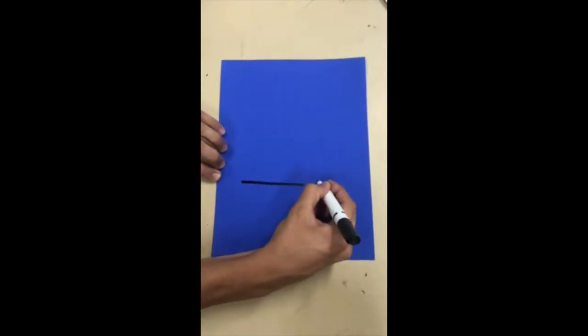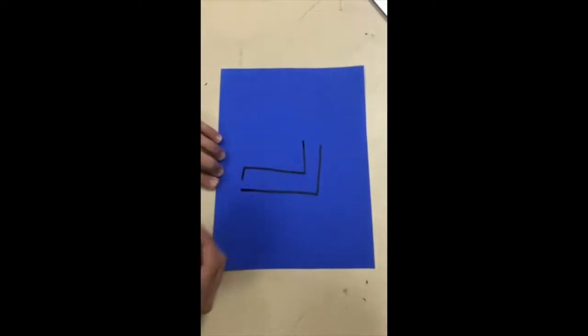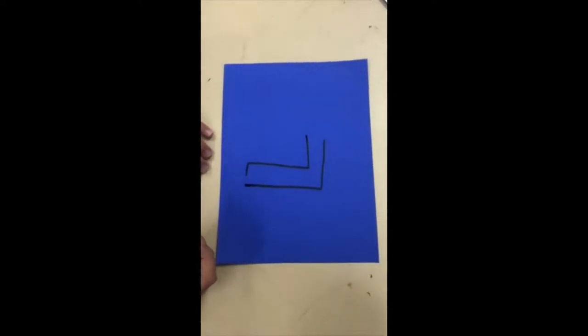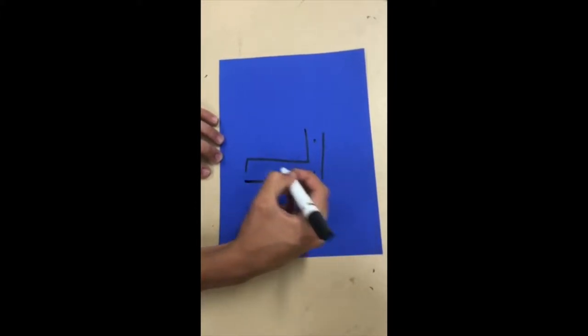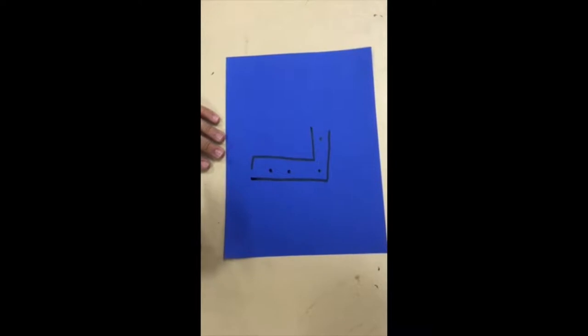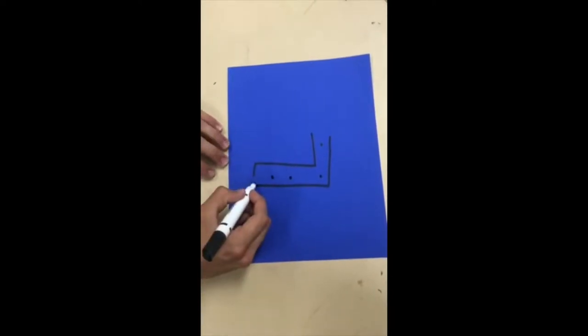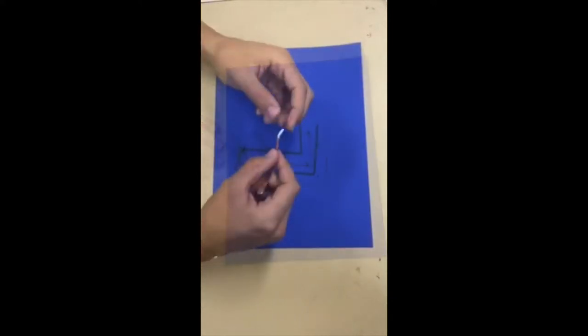Here I am drawing out the pattern that the copper tape will follow. I'm placing dots for the lights where the LED lights will go. That is where the battery will go, and that's where the open space will be.